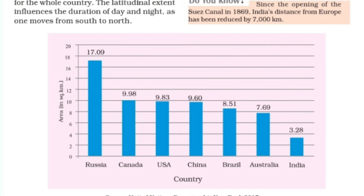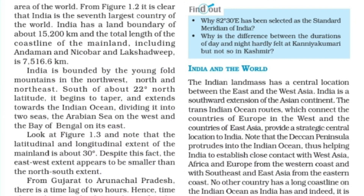India is bounded by the young fold mountains in the northwest, north, and northeast. South of about 22 degrees north latitude, it begins to taper and extends towards the Indian Ocean, dividing it into two seas: the Arabian Sea on the west and the Bay of Bengal on the east.